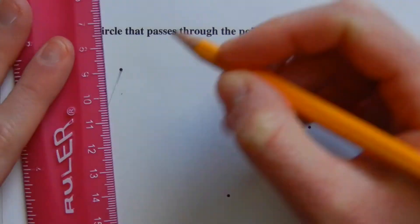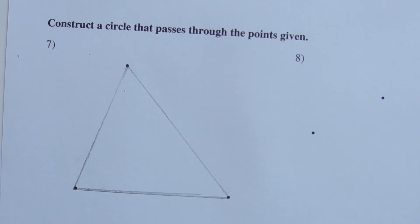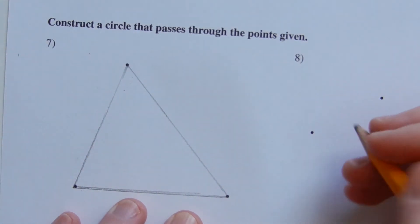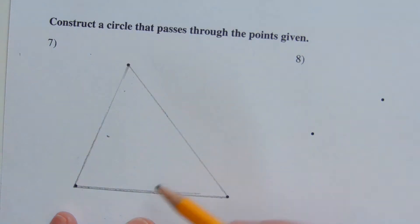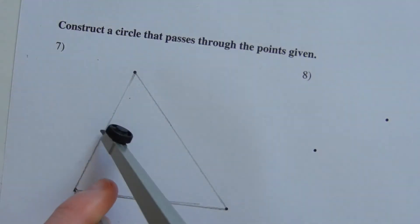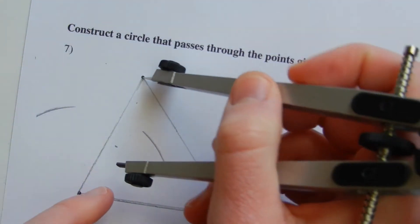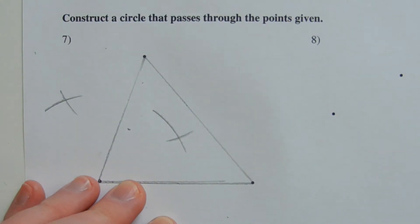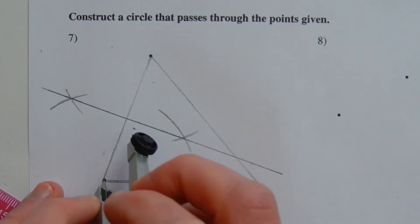Now in number seven, it says to construct a circle that passes through the given points — and we need to do the same for number eight. Note that we have three separate points, which if we connect them will form a triangle. We're going to be circumscribing a circle about the triangle. Remember, in order to do that we need to find the intersection of perpendicular bisectors. So we'll find the perpendicular bisector of two sides, making our compass a little more than halfway, drawing a mark to each side of the segment, then from the other endpoint drawing two more marks.